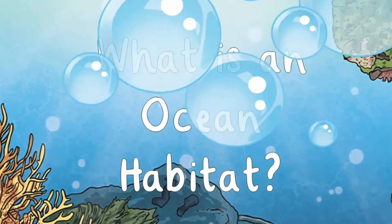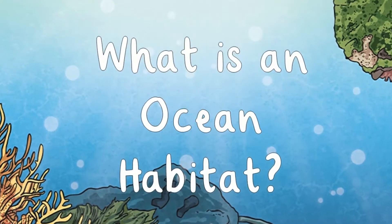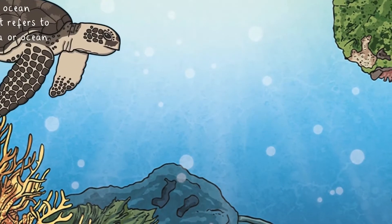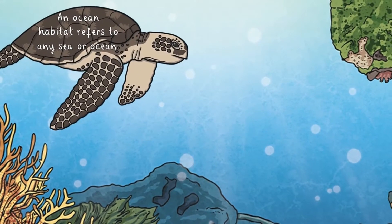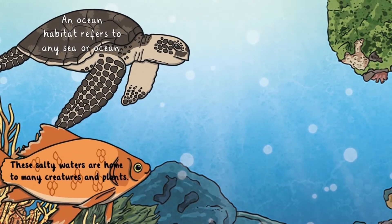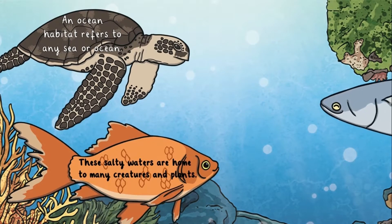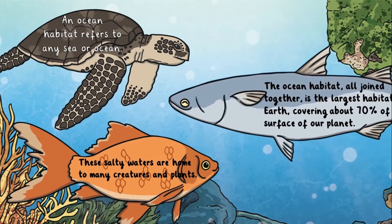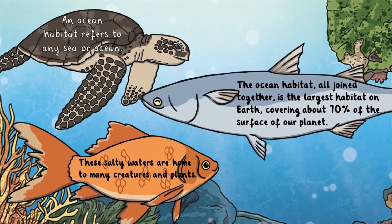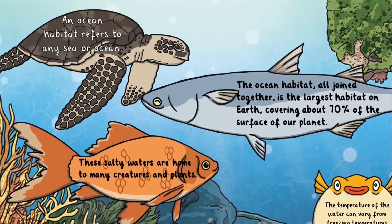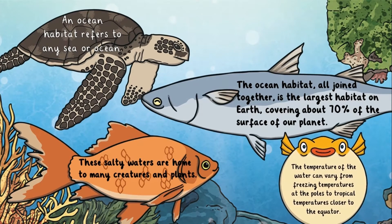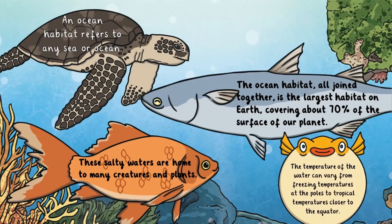You might be wondering what is an ocean habitat? Well, an ocean habitat refers to any sea or ocean. These salty waters are home to many beautiful sea creatures and plants. When joined together, the ocean habitat is the largest on Earth, which covers around 70% of our planet. The temperature of the water can vary from freezing temperatures at the poles to tropical temperatures closer to the equator.